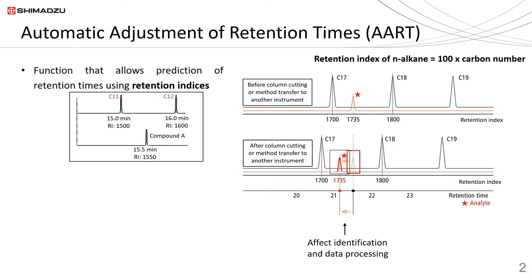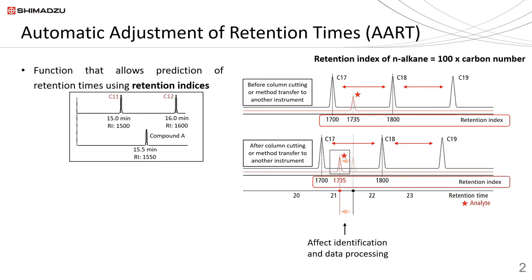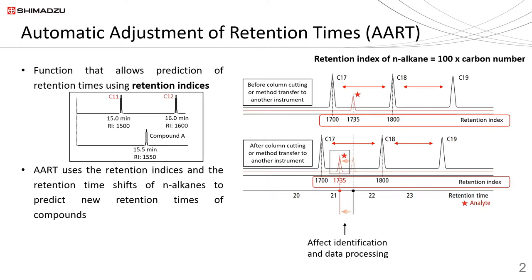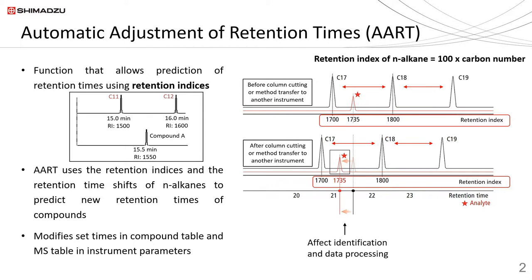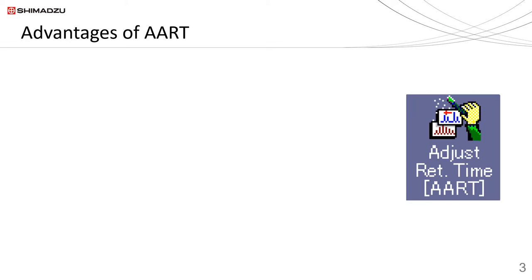Hence there is a need to modify the retention times. Although there is a shift in retention time when a column is cut or changed, the retention index and relative positions of the compounds remain unchanged when the same column stationary phase and dimensions are used. The AART function makes use of the retention indices and the shift in retention times of n-alkane standard to calculate the new retention times of target compounds, modifying the compound table and MS instrument parameters accordingly.